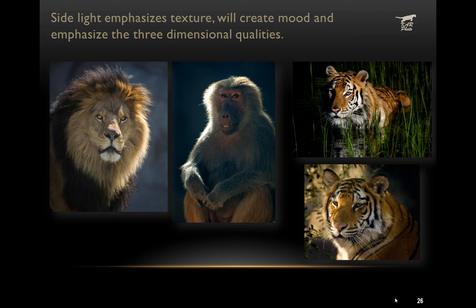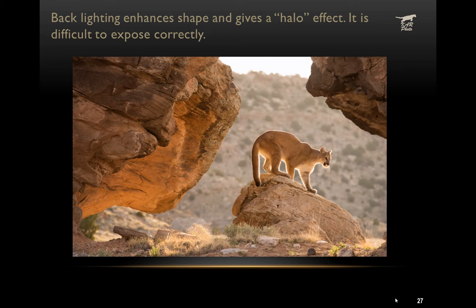Side light emphasizes texture — it creates a moodiness and three-dimensional quality in the photo. It's more complicated to expose for because you're deciding whether to let one side blow out to all white or the other side go to all black, or something in between. Take a few exposures and check the histogram. Back light emphasizes shape, and there are two ways to achieve it: spot meter on the subject to expose for the animal, giving a halo effect — a white line around the shape — or spot meter on the background, causing your subject to go all black due to the bright backlight.